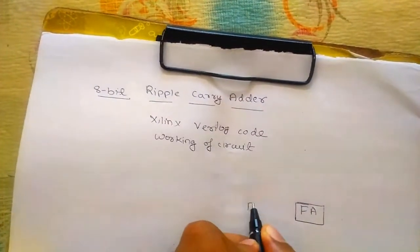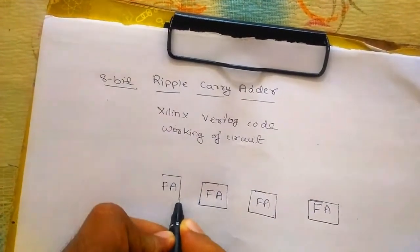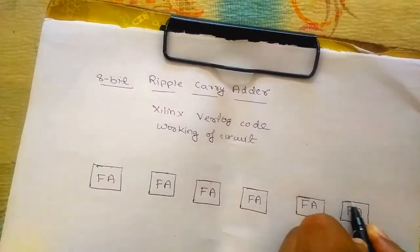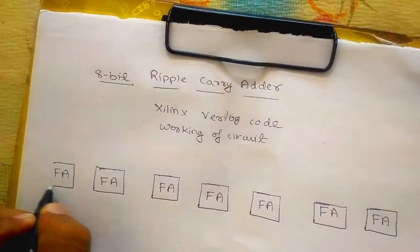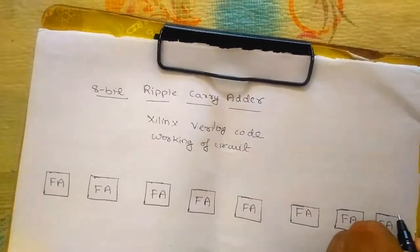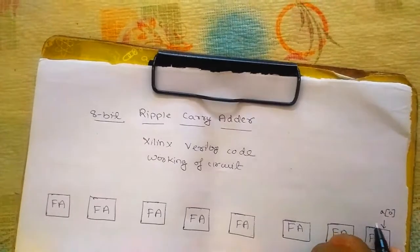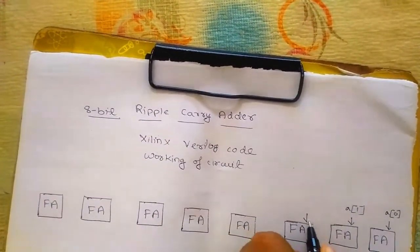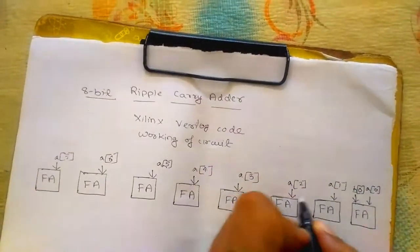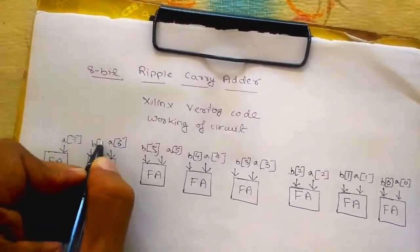For an 8-bit full adder we require 8 full adders. The inputs to the full adder are a and b, so a is 8 bits: a0, a1, a2, a3, a4, a5, a6, a7. Similarly for array of b: b0, b1, b2, b3, b4, b5, b6, b7.